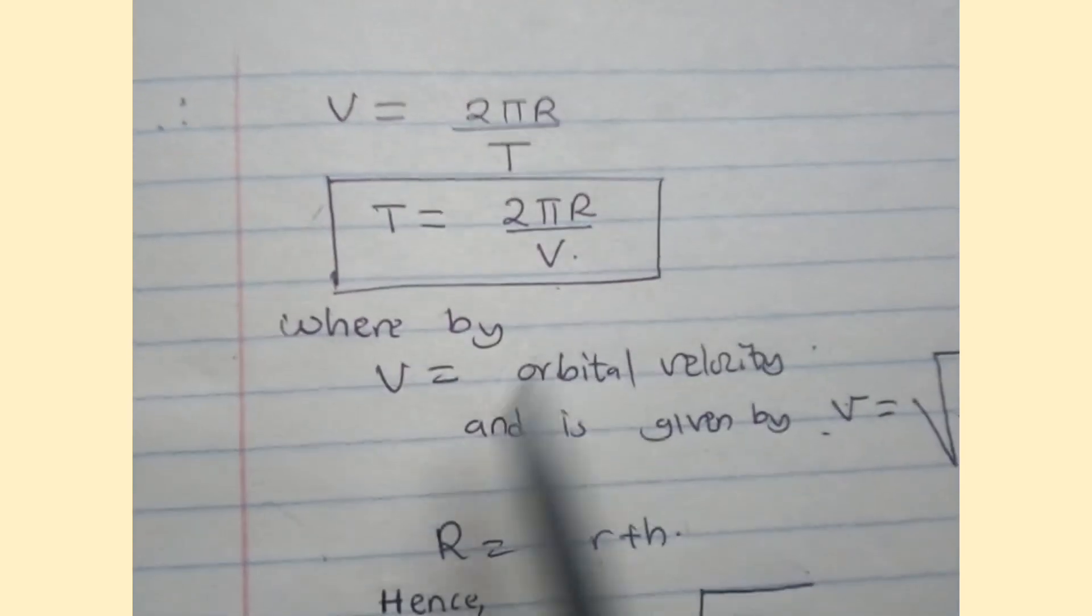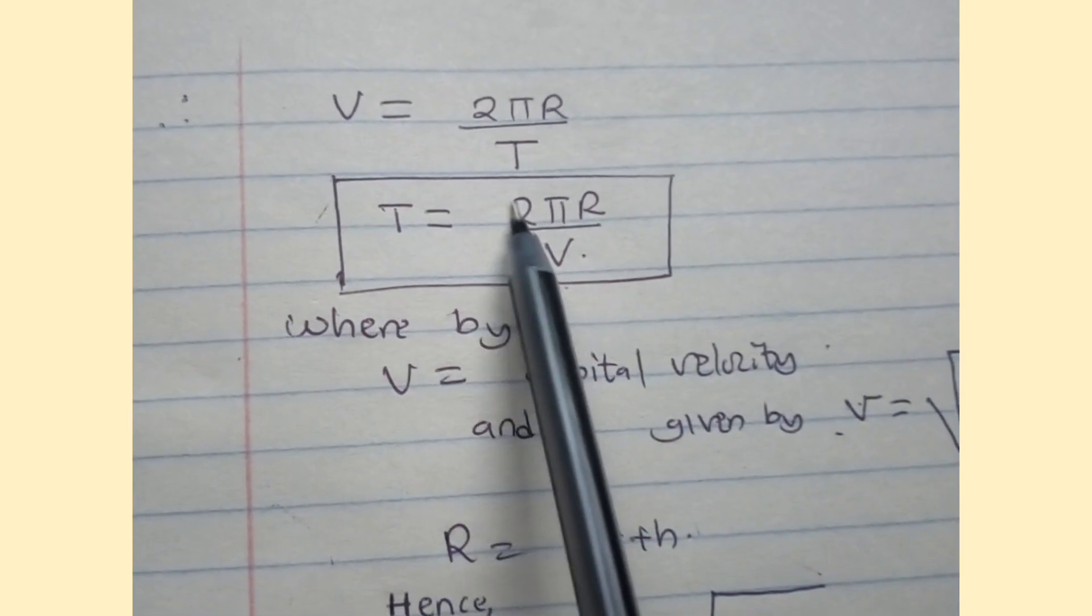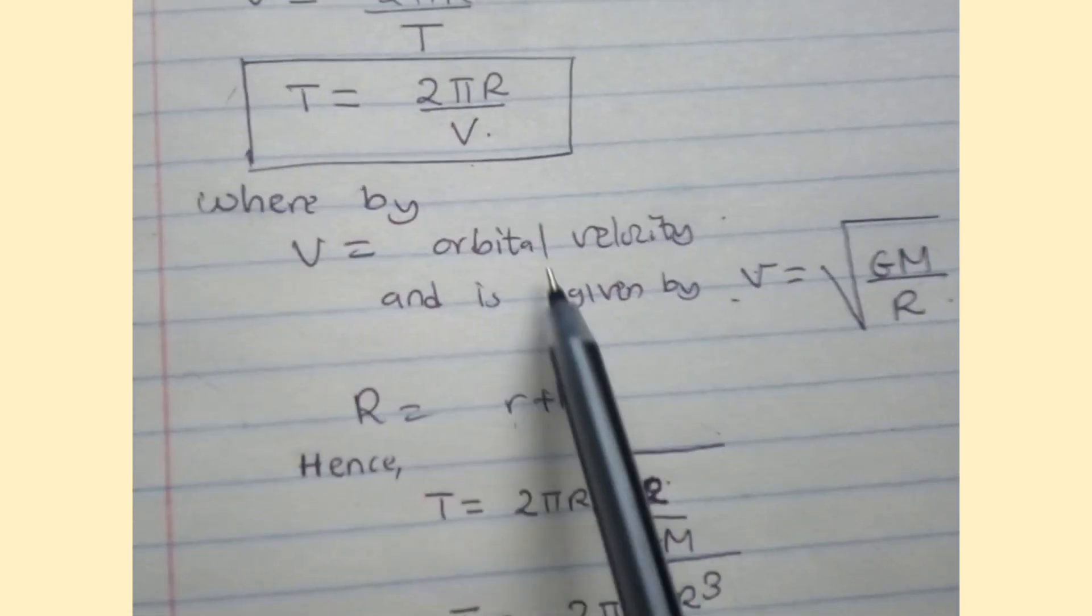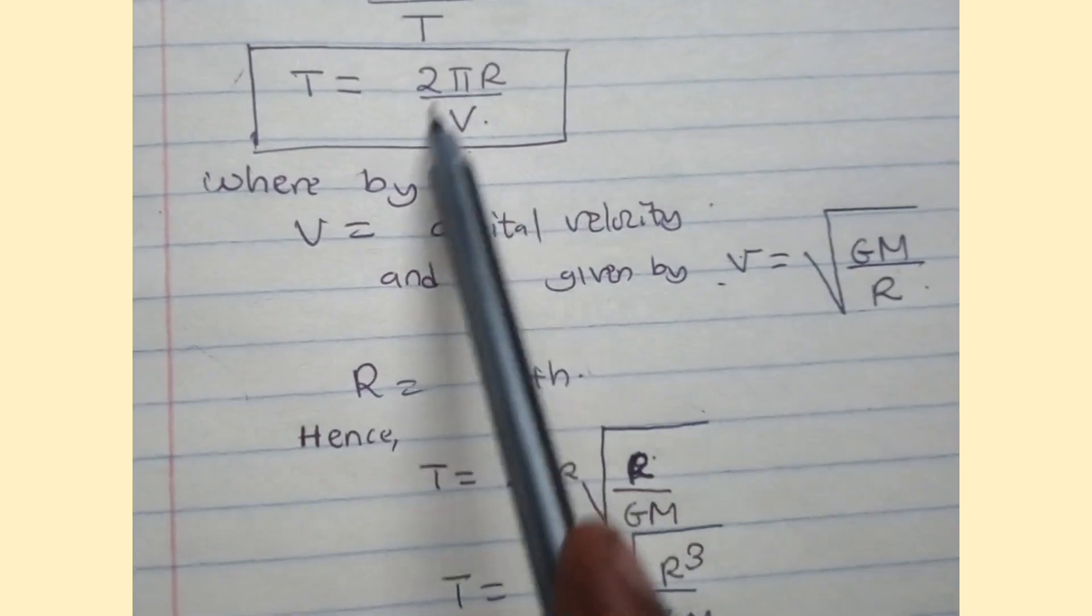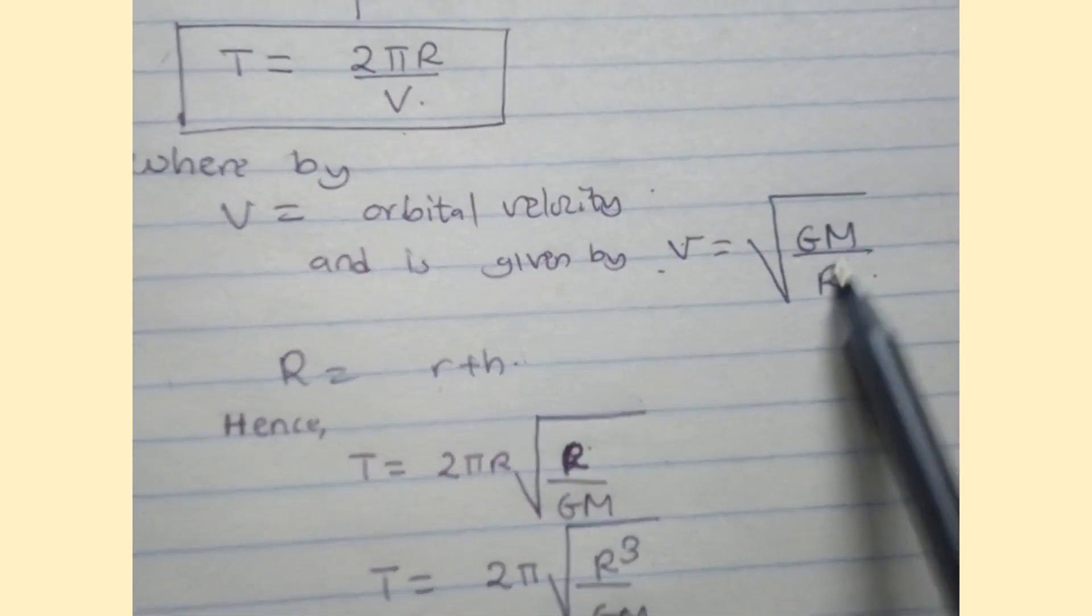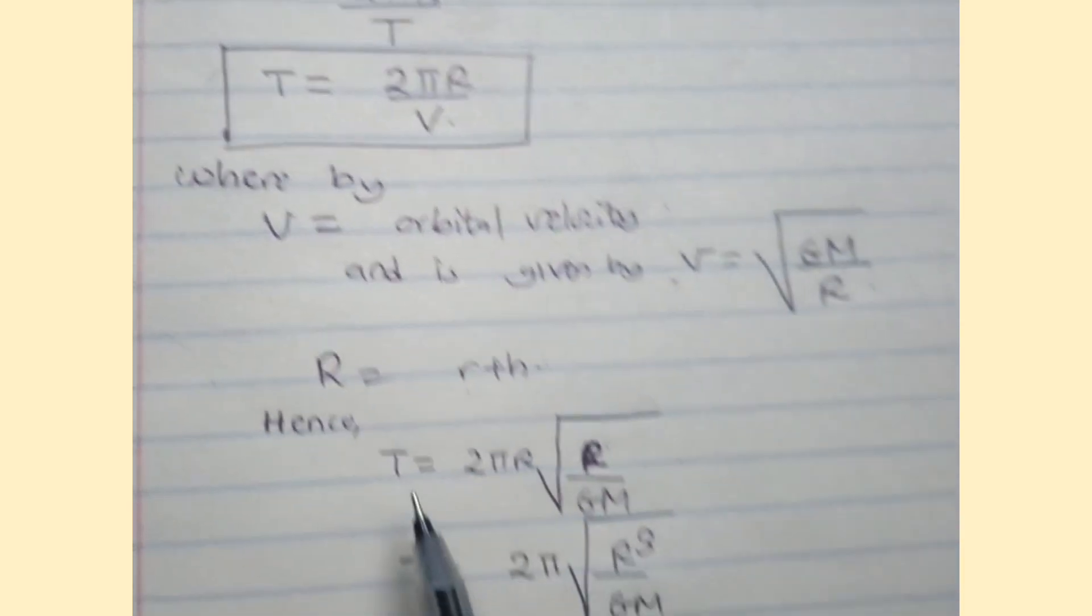This capital T is the time period of the satellite. We make T the subject and the result is T = 2πR/v. From case number one, the equation of v is given by square root of GM over R, so we substitute this equation.